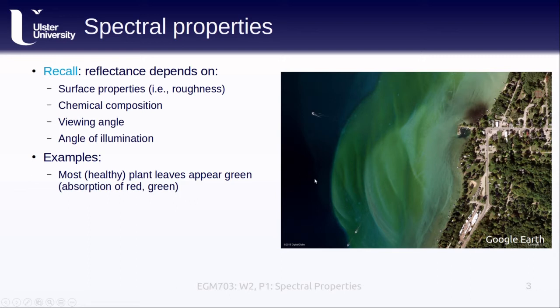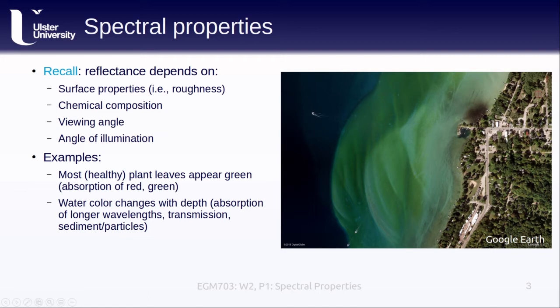Scattering by suspended sediments and other particles also plays a role. Because most of the light that is transmitted into the water column is preferentially shorter wavelengths, the light that's scattered back appears more green and blue, again, depending on the depth. All of this is to say that objects or surfaces reflect differently at different wavelengths.